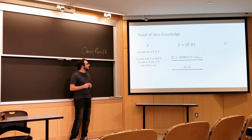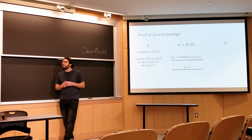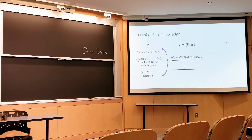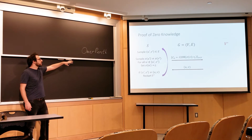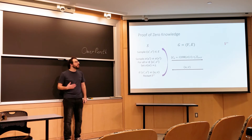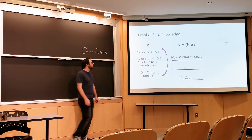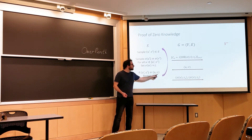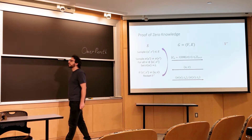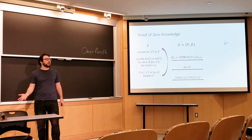If the verifier's challenge edge matches the guessed edge (u', v'), the simulator can open those commitments with the two random colors. If the edges don't match, the simulator has no hope of completing this interaction, so it restarts — takes the verifier, runs it again with fresh coins, samples a new random edge, re-colors it randomly, and tries again. This repeats until eventually the simulator guesses correctly. Once it does, it opens the commitments for that specific edge, and the verifier sees proof that looks exactly like it came from a real prover.